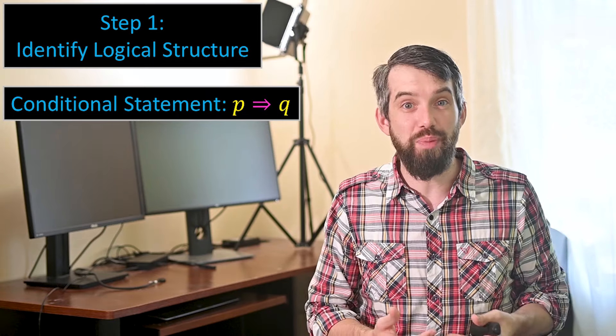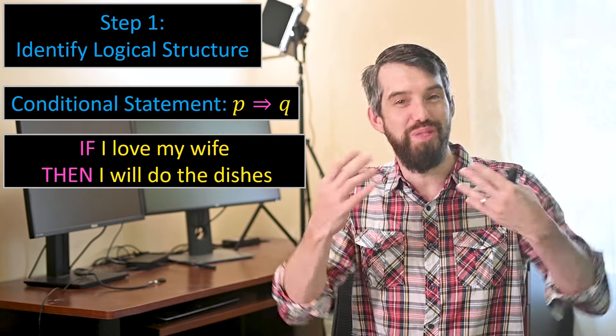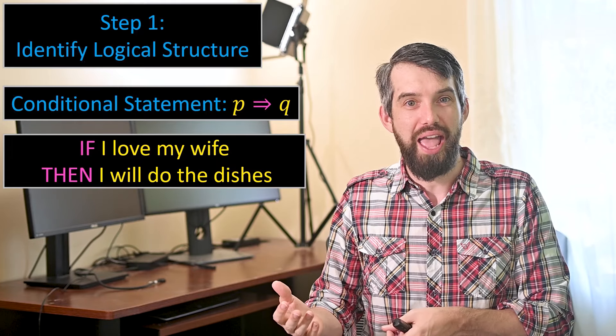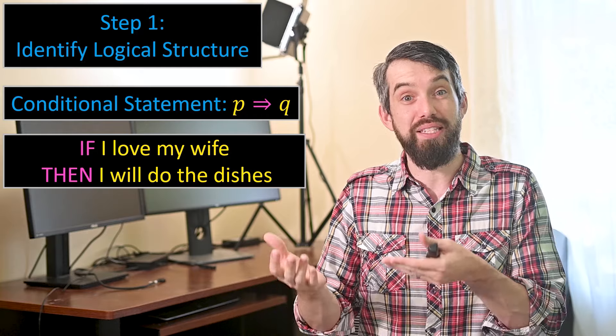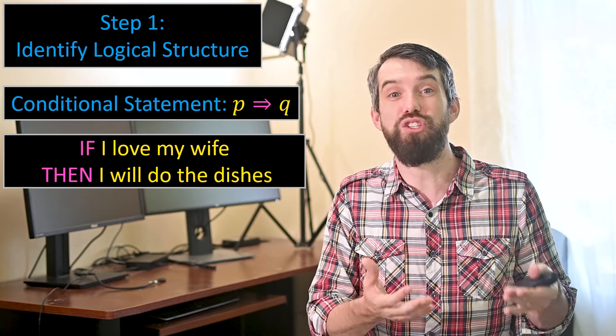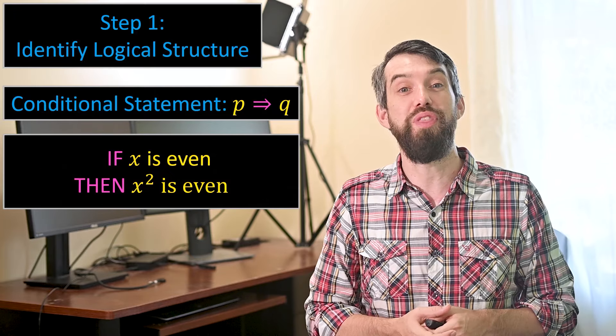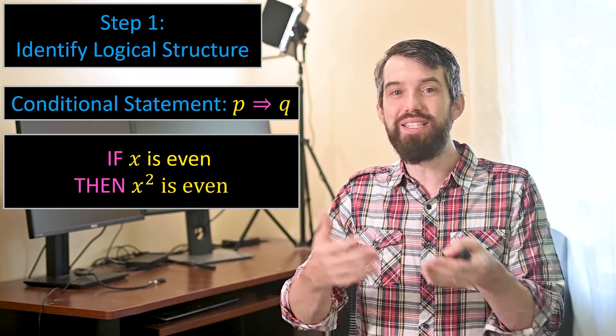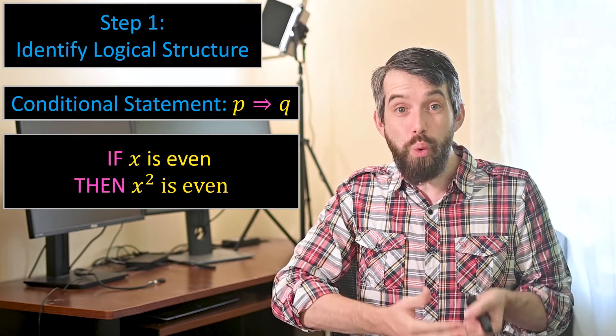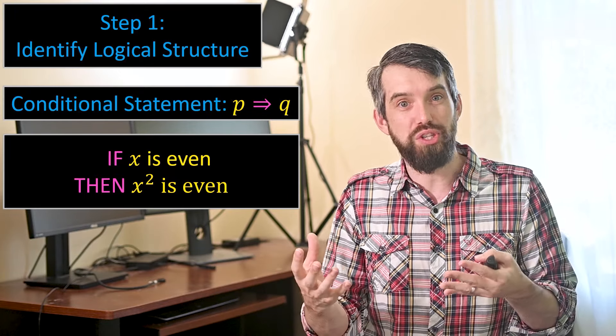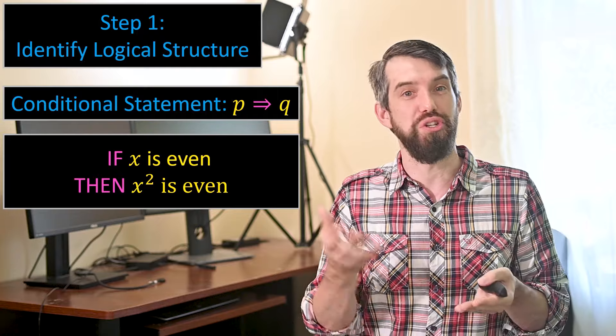It's an if-then statement. So as an example, I could say, if I love my wife, then I'll do the dishes. It's got an assumption and it's got a conclusion. This basic structure is there regardless of the actual details. For example, consider this claim: if X is an even number, then X squared is an even number. That is also a mathematical claim in the structure of a conditional statement.